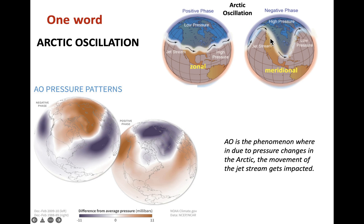On the other hand, in the negative phase, a high pressure zone exists over the polar region near the Arctic. Because of that, the cold air and the warm air are able to move up and down. The cold air is able to come down, resulting in an undulating jet stream that becomes highly unstable, thereby creating pockets of cold and warm parcels.